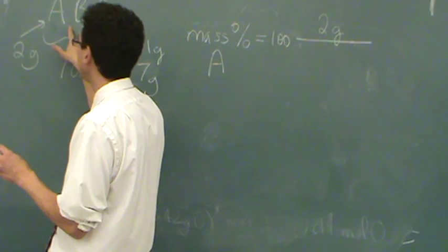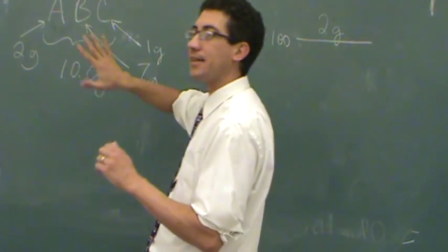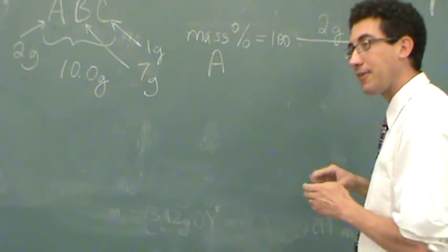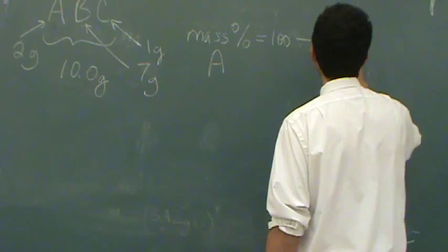So it doesn't matter if there's a subscript two here, or three, or whatever. If you're given the mass of A, that should be the mass total of A in the compound. So two grams divided by the total, which is ten.